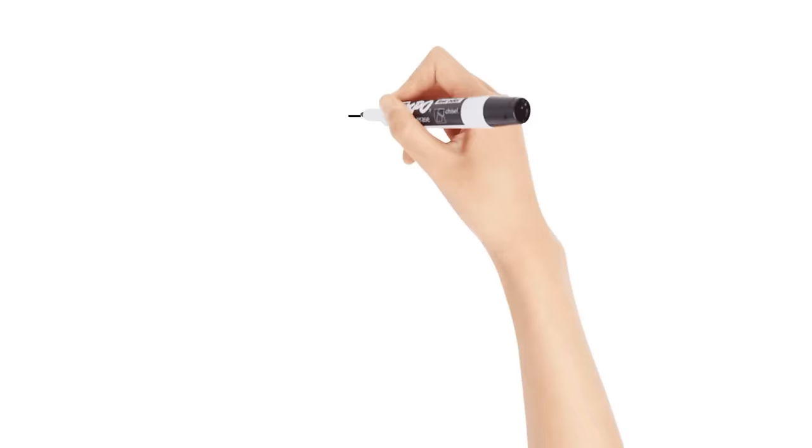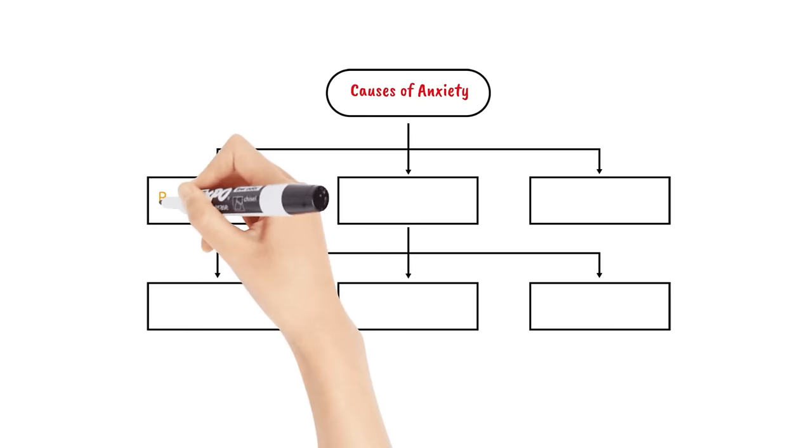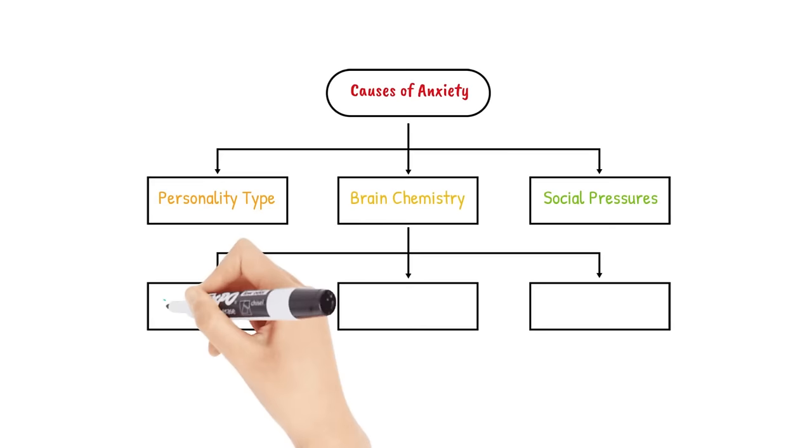Number two, understanding the underlying causes of your anxiety. Underlying causes of anxiety are things such as personality type, brain chemistry, social pressures, school pressures, genetics, or life stresses.